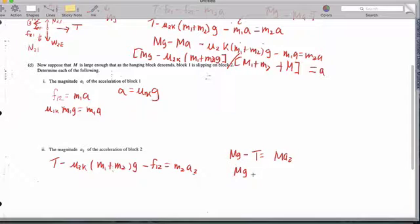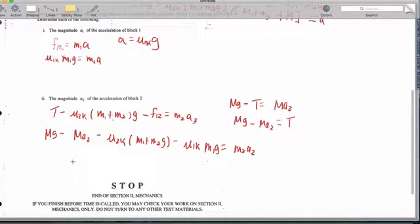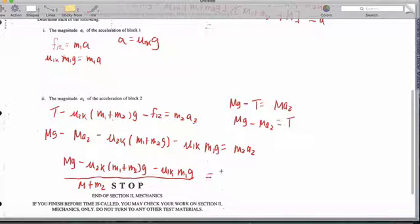Keeping that in mind, we're going to say that Mg minus M2 equals the tension, and I can substitute into here. So we have Mg minus Mg minus M1A2 minus F12, which is minus mu1 kinetic M1G equals M2A2. So let's put some of this together, and we'll end up getting that Mg minus mu2 kinetic M1 plus M2G minus mu1 kinetic M1G. So that's the acceleration on the second block.